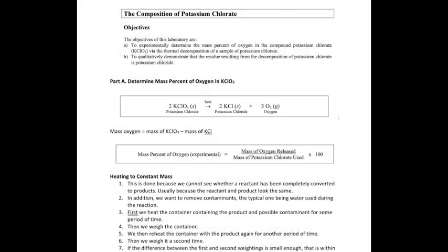This video covers the lab on the composition of potassium chlorate. There are two objectives: first, to figure out what the percent oxygen is in potassium chlorate using experiment, and second, to confirm that the product you make is potassium chloride, which is KCl.